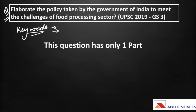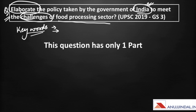The question says: 'Elaborate the policy taken by the government of India to meet the challenges of food processing sector.' Since it mentions government of India, we are not going to give a global perspective — we will limit to India as much as possible. 'Elaborate' is a keyword which means we have to write in detail. We might not have to talk about criticisms or the other side, because whenever we are told to elaborate, we have to explain something and do not necessarily criticize it unless the question demands.